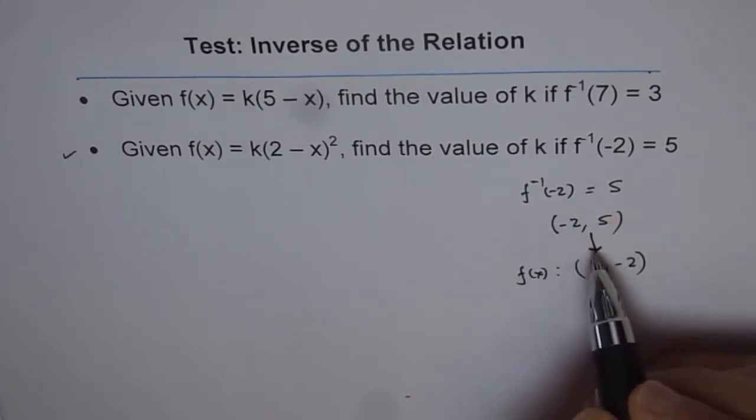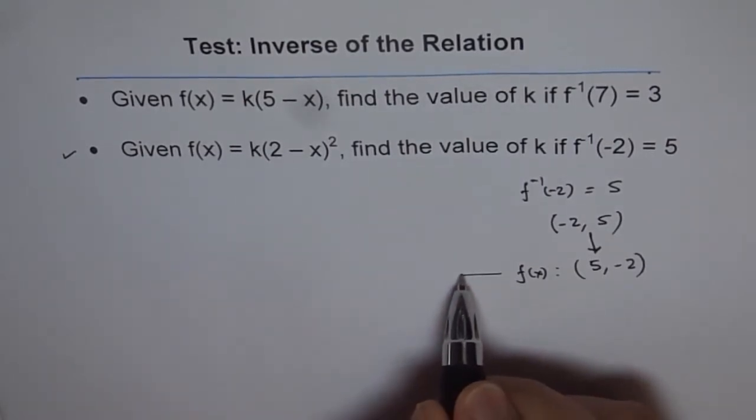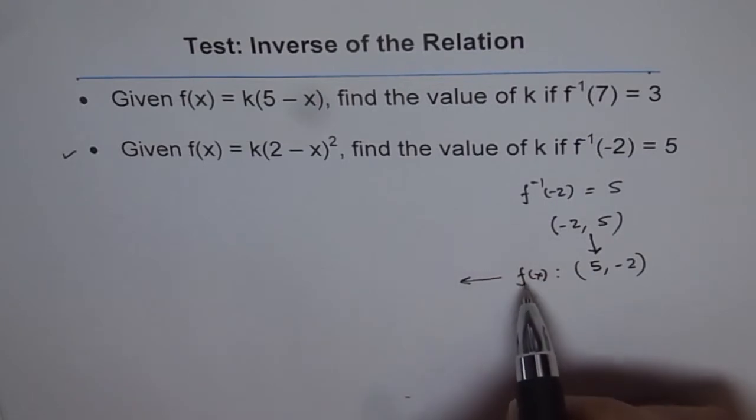Now that means we have a point on the function. Now if we have a point on the function, then it is easy to find the value of k. That is what it is. So the point on the function is: 5 is x and -2 is y value.